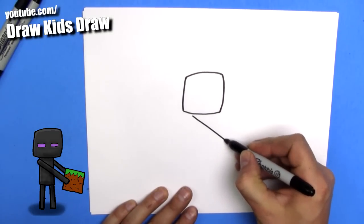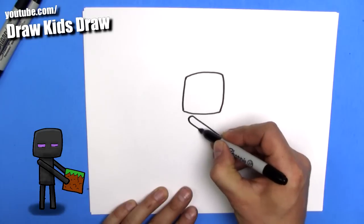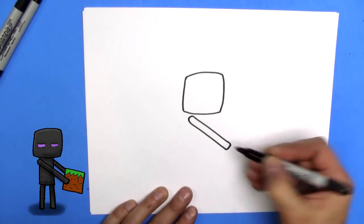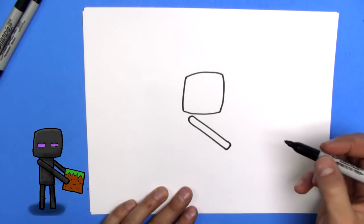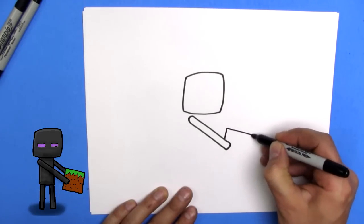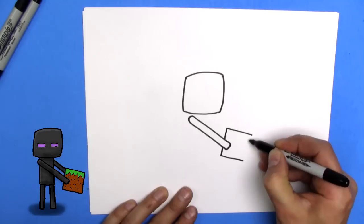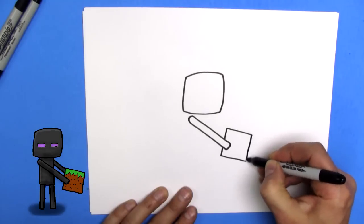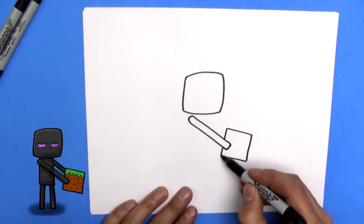Then we're going to draw a long arm, like so. And we're going to put a box in that arm, because Endermen like to steal blocks. So we're going to draw a square like this, and just make sure it goes behind the hand a little bit.